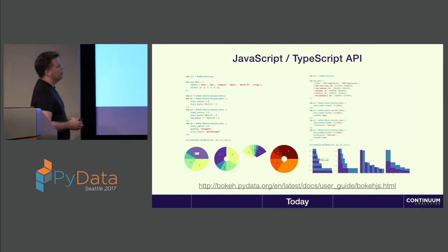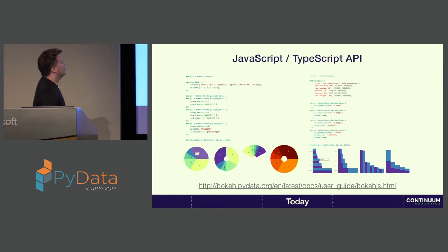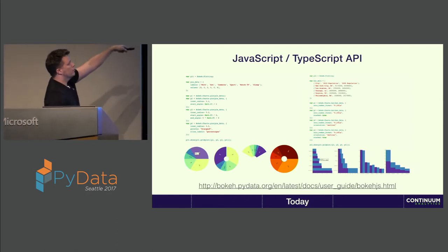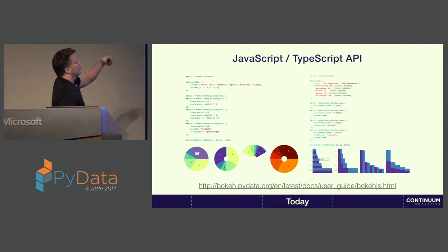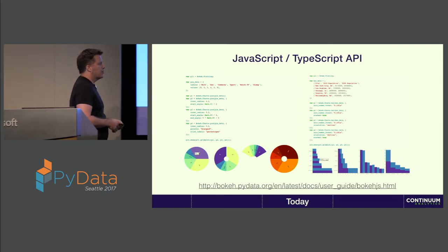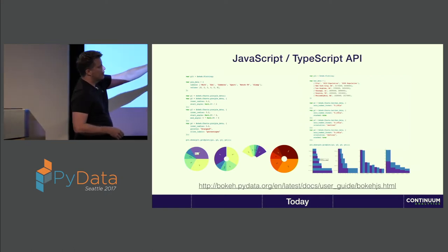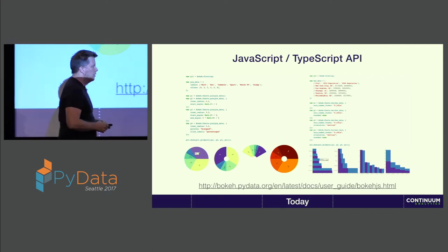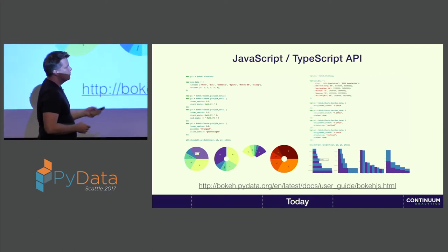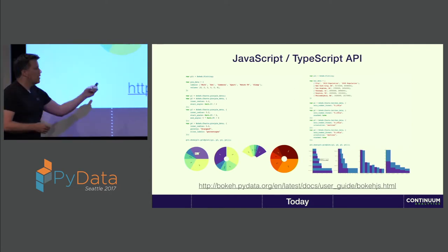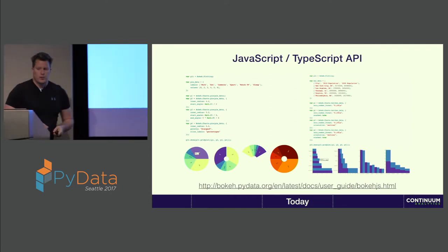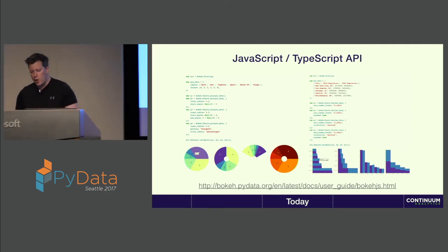Some high-level charts you can create very simply with Bokeh.js — a pie chart or a box chart — and this is all the code to generate all of those charts. They automatically come with things like hover tooltips and pop-ups. You can find out more about that from the user's guide online.